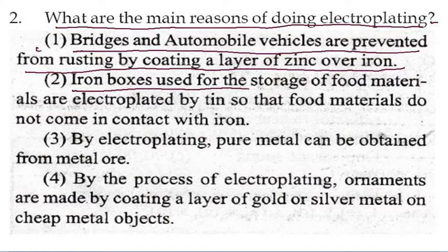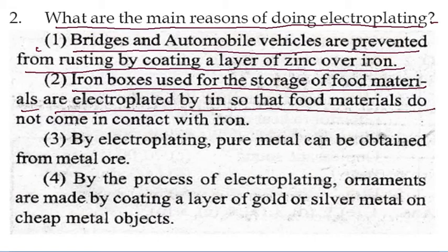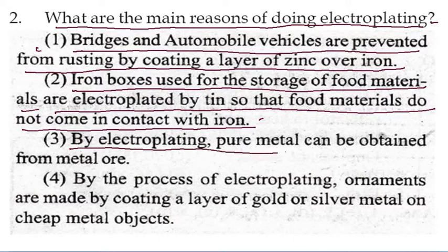Second, iron boxes used for the storage of food materials are electroplated with tin, so that food material does not come in contact with iron. Tin electroplating is done so that iron does not contact food and the food material does not get spoiled. Third, by electroplating, pure metal can be obtained from metal ore.